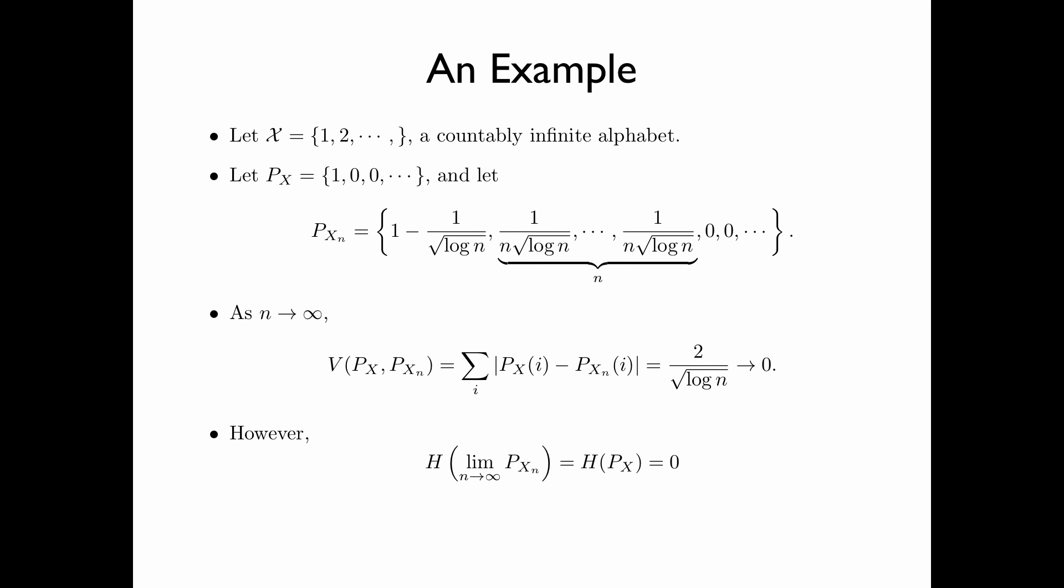However, the entropy of the limit as n goes to infinity P_X^n, which is equal to the entropy of P_X, namely the entropy of the deterministic distribution, is equal to zero. But the limit as n tends to infinity of the entropy of P_X^n can be shown to be equal to infinity. This is left as an exercise.